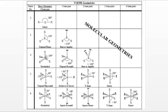For steric number four, we have three possible arrangements: four bonds (tetrahedral), three bonds and one lone pair like ammonia (trigonal pyramidal), and two bonds and two lone pairs like water (bent). The more lone pairs pushing down, the tighter the angle. Water's angle is closer to 100°, while trigonal pyramidal is a little less than 109°. For steric number five there are several arrangements, and for steric number six we call it octahedral — six bonded groups on a central atom.